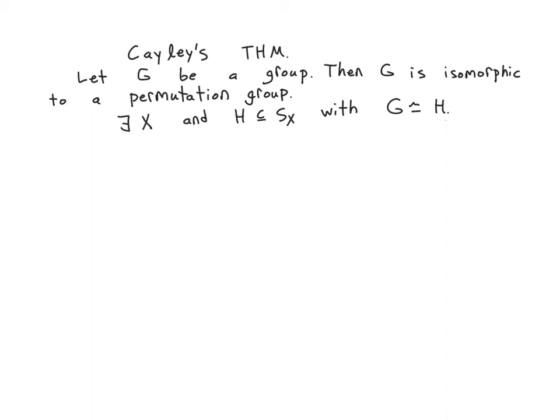In other words, there exists some set X and some subgroup H in the symmetric group on X, such that G is isomorphic to H.